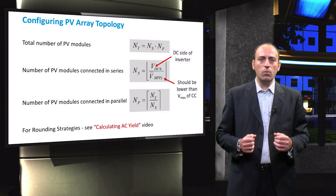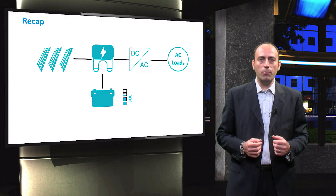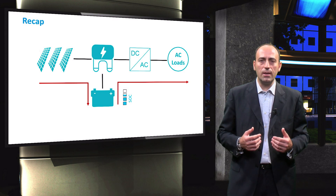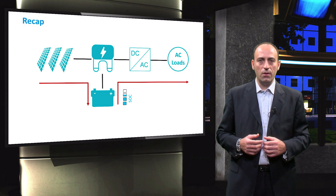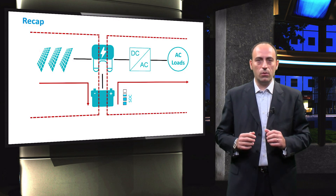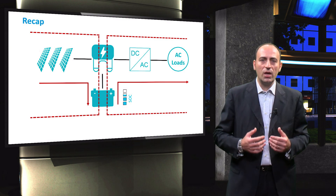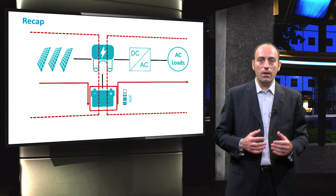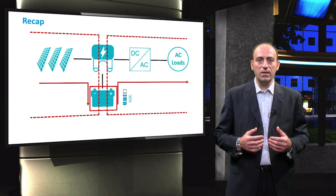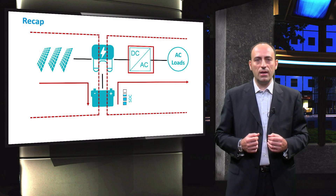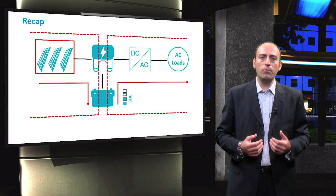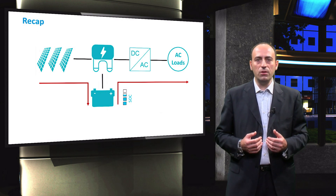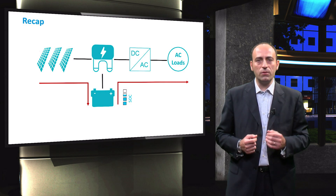To conclude, in this video we saw the sizing of the different components in a standalone PV system. The design of such a system is based on the concept that the flow of energy happens via the batteries at all times, thereby decoupling the PV array and the loads. The size of the battery bank is determined with respect to the load, then the inverter is sized, and finally the PV array size is calculated. In the next video, we are going to use the information calculated so far and from the previous video to determine the performance of the standalone PV system.